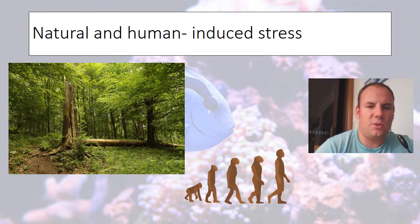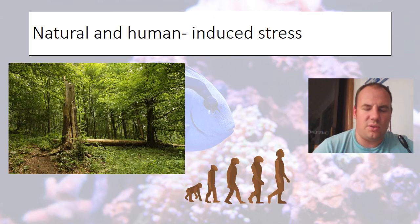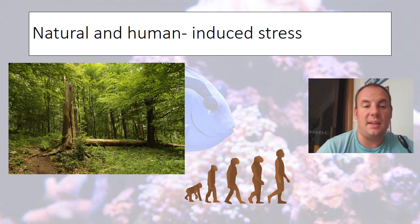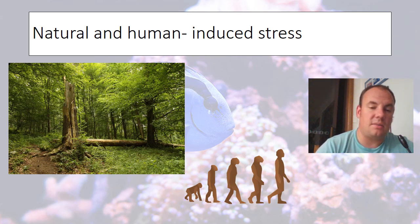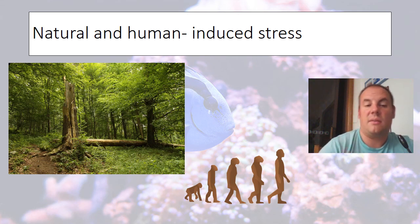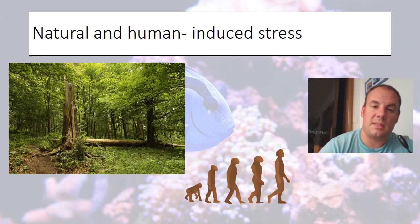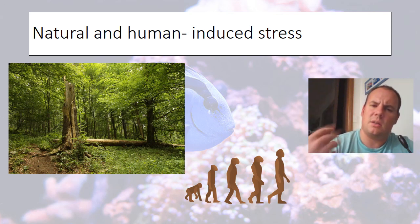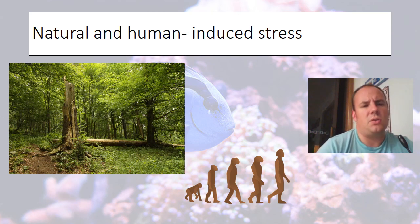Almost forgot — natural and human-induced stresses. Human-induced stresses increase vulnerability because of the speed at which humans put stress on ecosystems. Natural stresses happen over a long period of time and therefore don't create the same vulnerability. So natural stress reduces the vulnerability of an ecosystem, and the opposite can be said for human-induced stress.